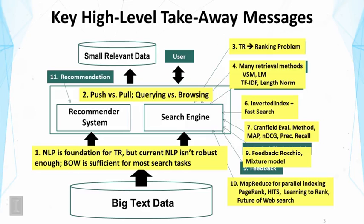We then talked about learning to rank — the use of machine learning to combine multiple features for improving scoring. Not only can effectiveness be improved using this approach, but we can also improve the robustness of the ranking function, making it not easy to spam a search engine with just some features to promote a page.